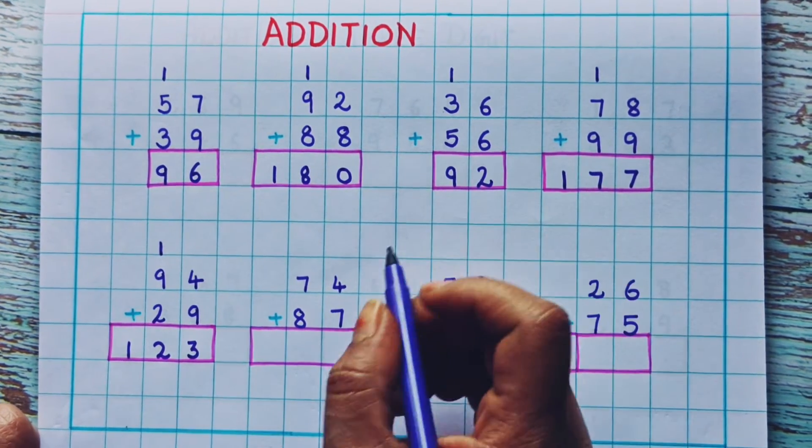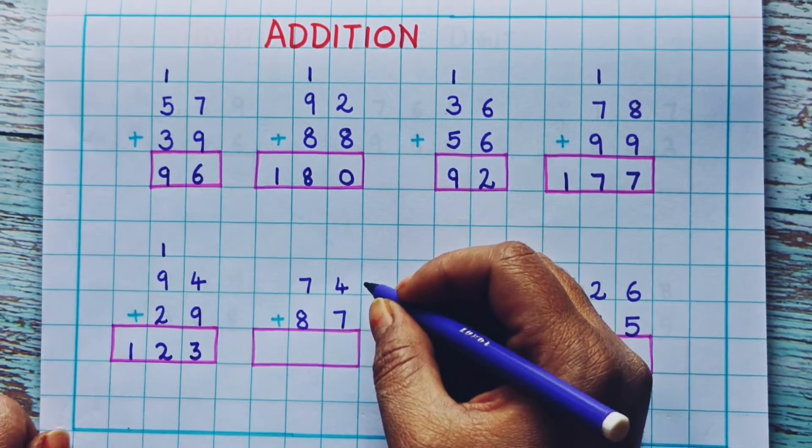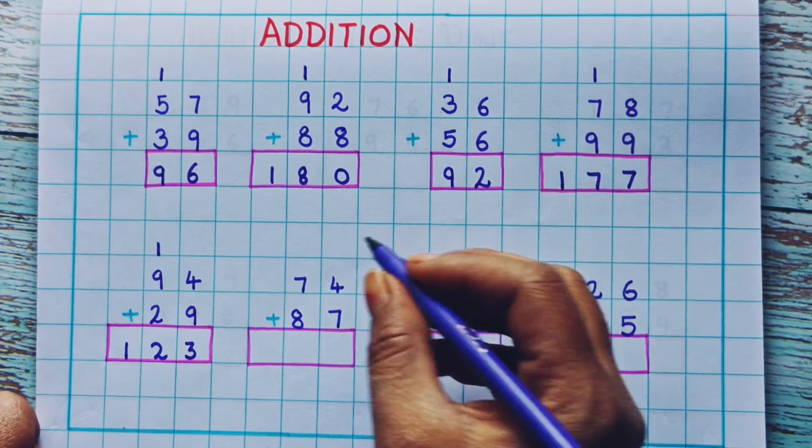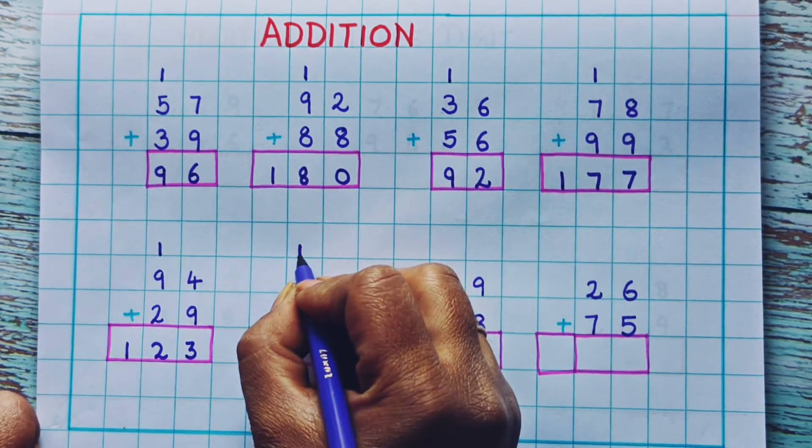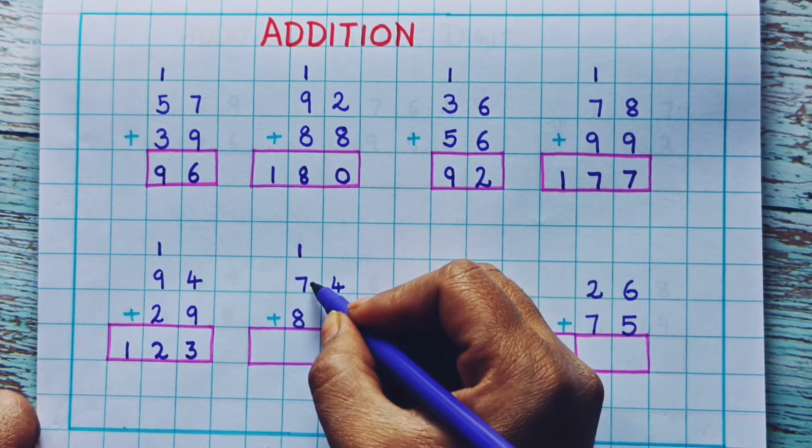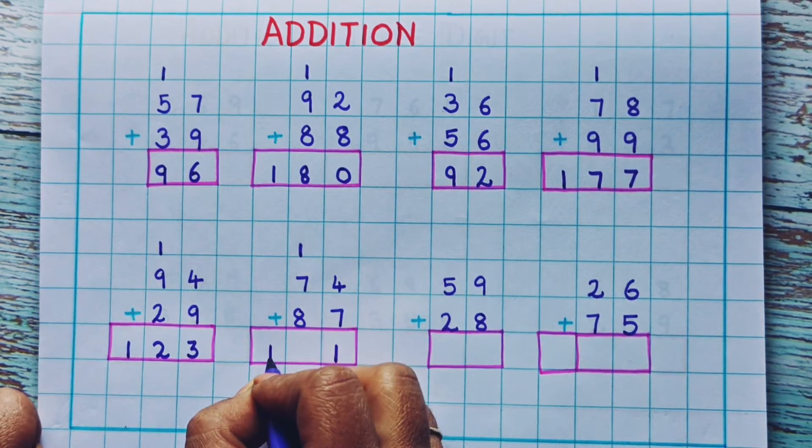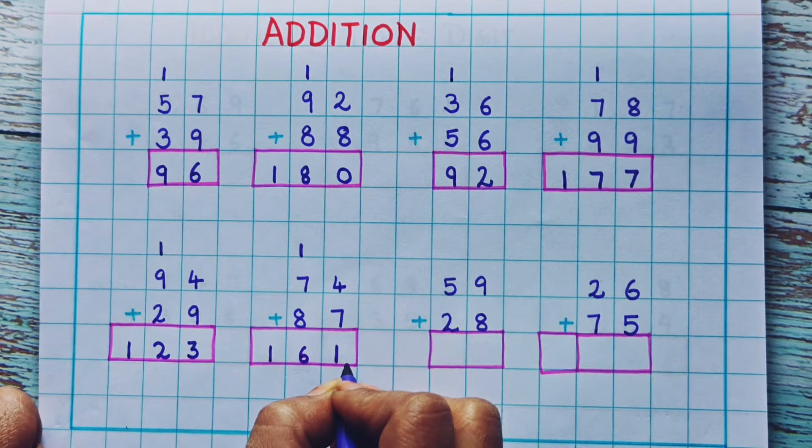Now let's see the next one. 74 plus 87. Now 4 plus 7 is how much? 11. So I will write here 1 and here 1. Now 1 plus 7 is 8. 8 plus 8 is 16. So the answer is 161.